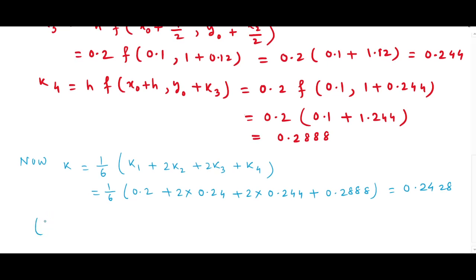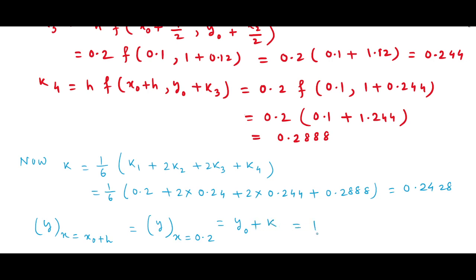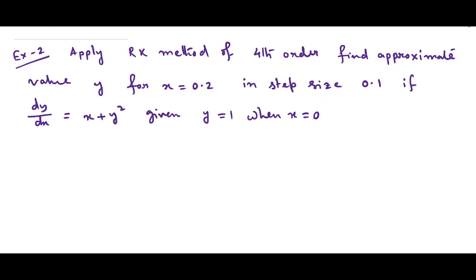Now we put all values into k: k = 1/6 times (k1 + 2k2 + 2k3 + k4) = 1/6 times (0.2 + 2(0.24) + 2(0.244) + 0.2888). After calculation, k = 0.2428. Finally, y at x = 0.2 equals y-naught + k = 1 + 0.24 = 1.24.